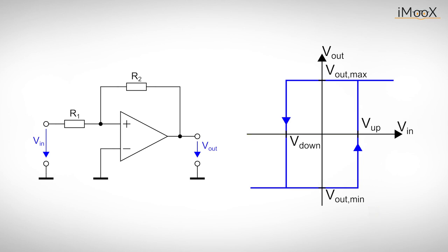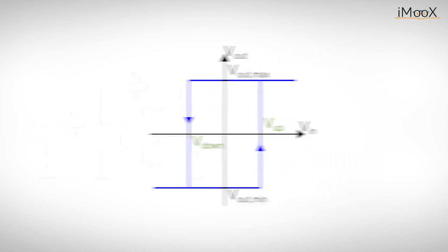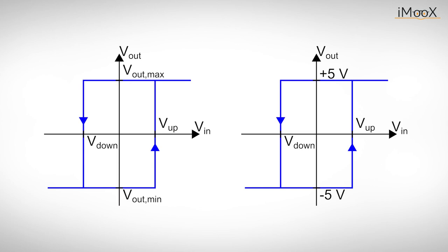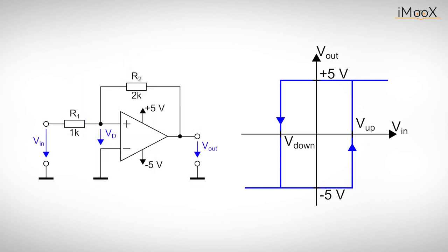But how do we get the trigger levels Vup and Vdown? Let's calculate this non-inverting Schmitt trigger circuit as an example. As a starting condition, we choose the output voltage as minus 5 volts. Now we want to derive Vup. In order to cause the operational amplifier to switch, we need to apply an input voltage that results in a differential voltage Vd of 0 volts. We set the limit of Vd equals 0 volts for our calculations.